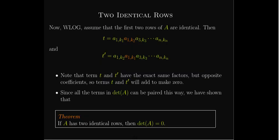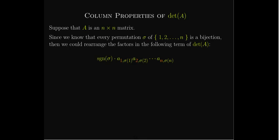Of course, that makes sense: if we have two identical rows, the column vectors are not linearly independent, which means the matrix cannot be invertible. Now, we've been focusing on rows — but there's nothing in the definition requiring that. We just did it for convenience.